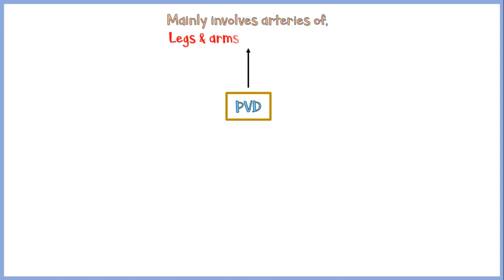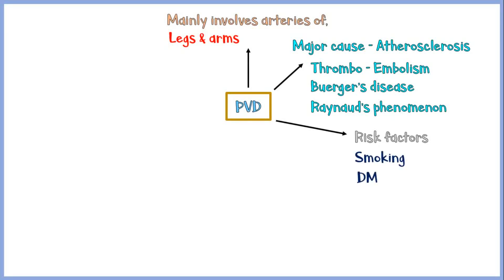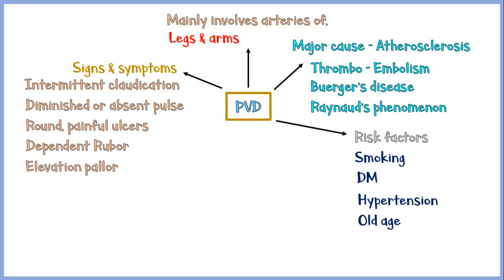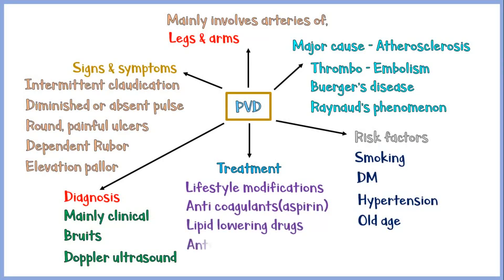In summary, peripheral vascular disease mainly involves the arteries of legs and arms, with atherosclerosis as the major cause. Other causes include thromboembolism, Buerger's disease, and Raynaud's phenomenon. Risk factors include smoking, diabetes mellitus, hypertension, and old age. Key signs and symptoms include intermittent claudication, diminished or absent pulse, round painful ulcers, dependent rubor, and elevation pallor. Diagnosis is mainly clinical, supplemented by auscultation for bruits and Doppler ultrasound. Treatment includes lifestyle modifications, medications such as anticoagulants, lipid-lowering drugs, anti-diabetics, and anti-hypertensives, and rarely surgery like angioplasty and bypass.